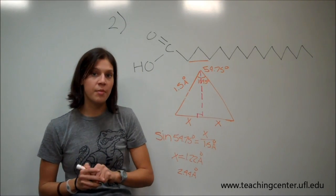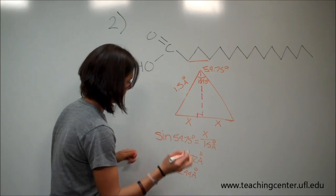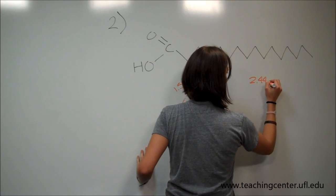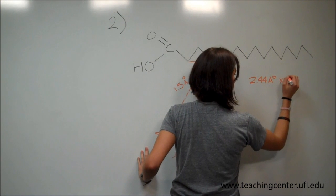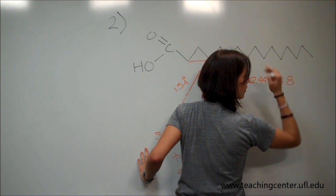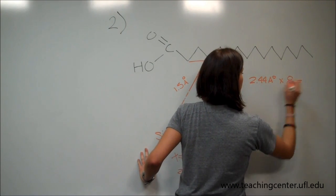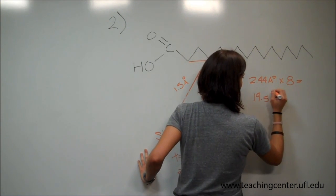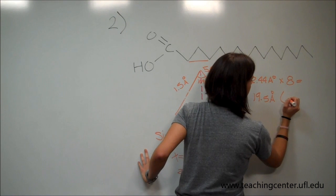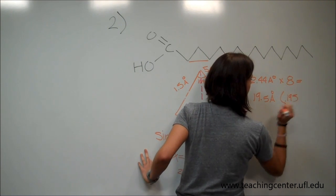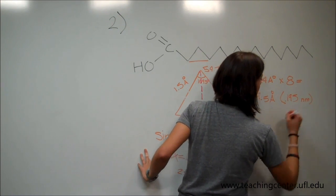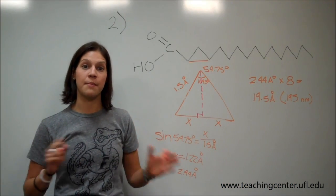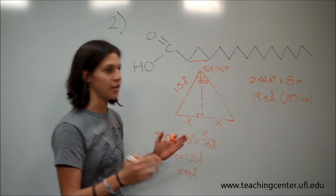And since it's 16 carbons, like I said, we're going to multiply it by 8. And we are going to get 19.5 angstroms, or you can put 0.195 nanometers. And this is only the length of one palmitate, and it said 2 palmitates back to back. So we're actually going to multiply this by 2 again.